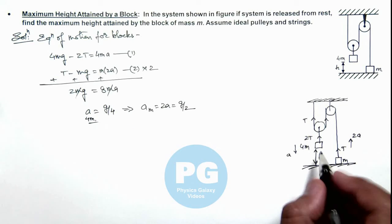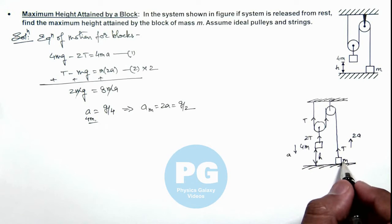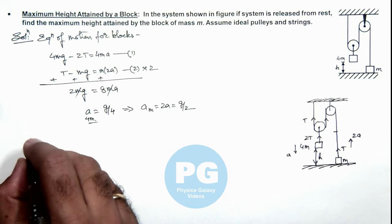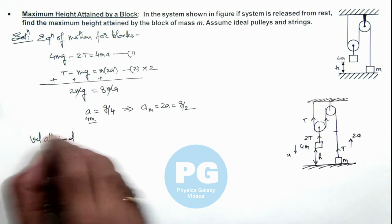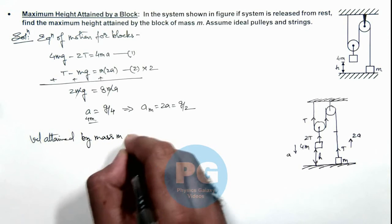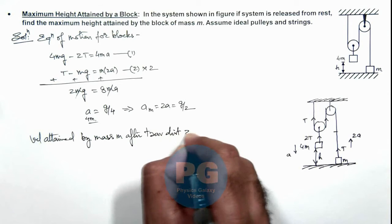Now, when the system is released, 4m will fall by a distance h, due to which mass m will move up by a distance 2h. So here we can find out the velocity attained by mass m after traveling distance 2h.